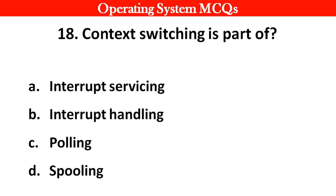Next question: Context switching is a part of: Options: A. Interrupt servicing. B. Interrupt handling. C. Polling. D. Spooling. Right answer is option B: Interrupt handling.